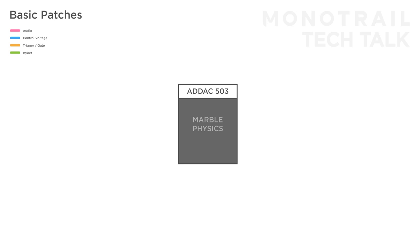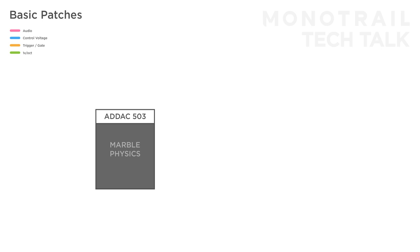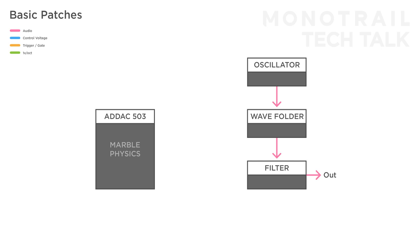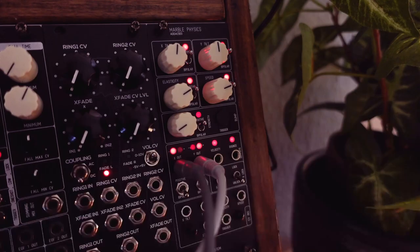As you've seen in the intro, Marble Physics can easily be used as an LFO or constant moving signal generator when the elasticity is turned up. Here is another simple voice with a wave folder between the oscillator and filter. The Y output is used to modulate the filter, and the X output to modulate the wave folder. With high elasticity settings, this setup turns into two LFOs. The behavior of the LFOs is related but not similar. You can influence the behavior of each of the outputs with the tilt control. Balancing the elasticity between looping motion and natural decay can create interesting results.